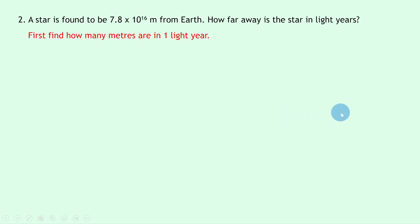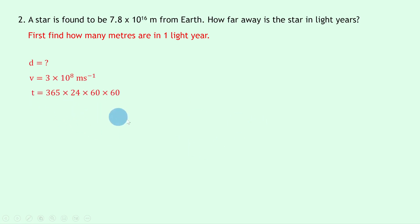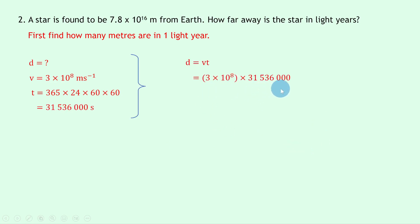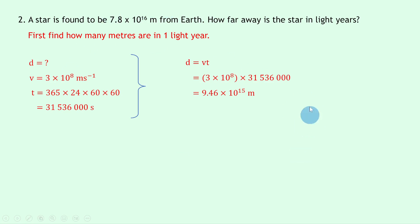First, let's find how many meters are in one light year, just like in question one. d is what we're finding, v is the speed of light 3×10⁸ meters per second, and t is the number of seconds in one year — 31,536,000 seconds. So d = vt = 3×10⁸ × 31,536,000 = 9.46×10¹⁵ meters. It's useful to either remember this calculation or just remember the value 9.46×10¹⁵ meters for one light year.